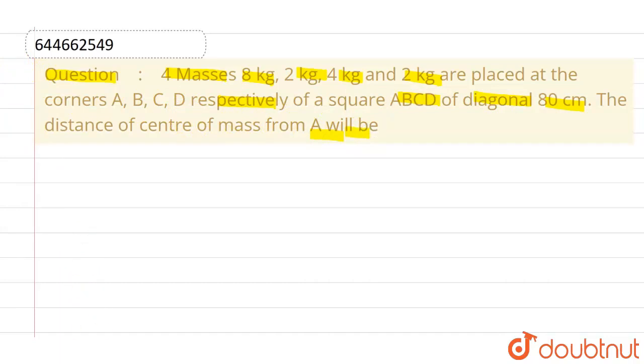Now let us assume this is the square. Let us suppose this is A, this is B, this is C and this one is D. And we are also considering that this axis is x-axis and this axis is the y-axis. Now we are given that the diagonal length of square ABCD is 80 cm.